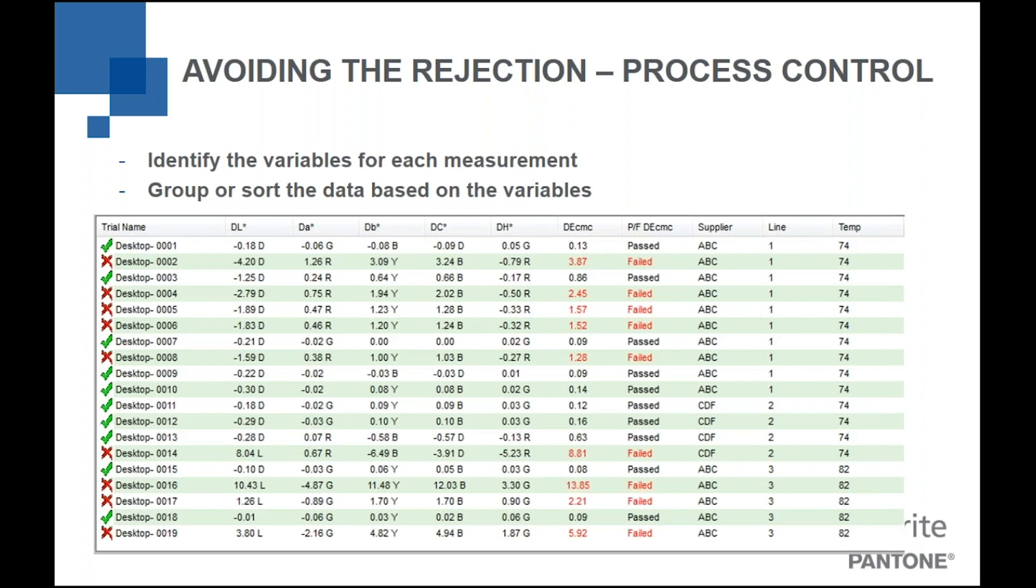In the software, I can then click on any one of those columns and sort by it. So, hopefully, I can start to see a trend of, oh, well, everything from this supplier tends to be lighter and everything from that supplier tends to be darker.